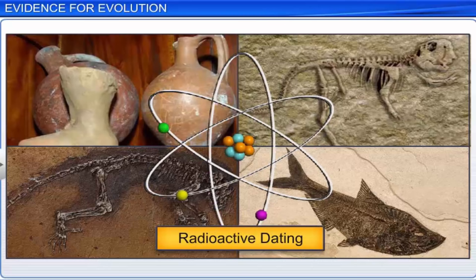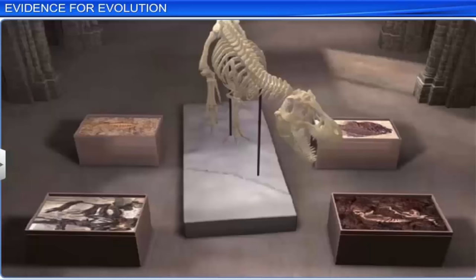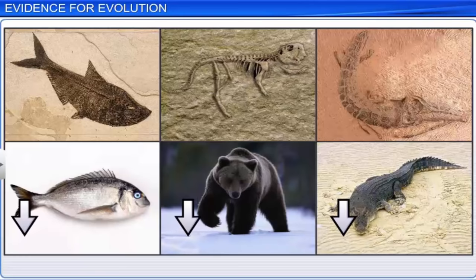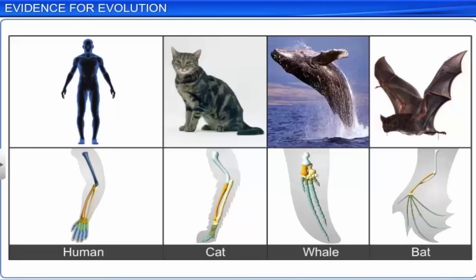One of the most widely used and accepted techniques to determine the actual or relative age of the Earth's crust, fossils, and ancient artifacts is radioactive dating. In this technique, a comparison is drawn between an abundantly available radioactive isotope and its decay products, by using the rate of decay. Fossils are also of great help in morphological and anatomical studies, including comparative anatomy, which is the study of similarities and differences in the internal anatomy of organisms of the past with those of today. There are two concepts of comparative anatomy: homologous and analogous structures.